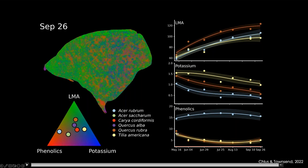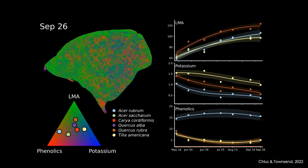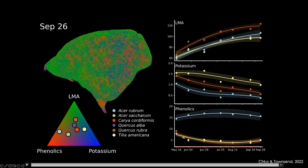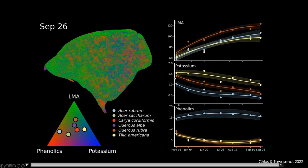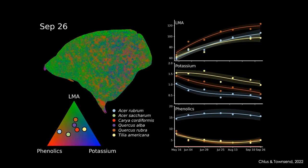The other species start out at the beginning of the growing season with high levels of phenolics. When young leaves come out, they're very tasty, and that's when herbivores or insects want to come and defoliate the leaves—so it's in the plant's best interest to have higher amounts of defensive compounds with those young, tender leaves. As the leaves grow older, leaf mass per area increases, and as leaves get thicker, they become less palatable, so there's less need for phenolics. Maples, however, continue to increase in LMA and use phenolics as their primary defense mechanism throughout the season.